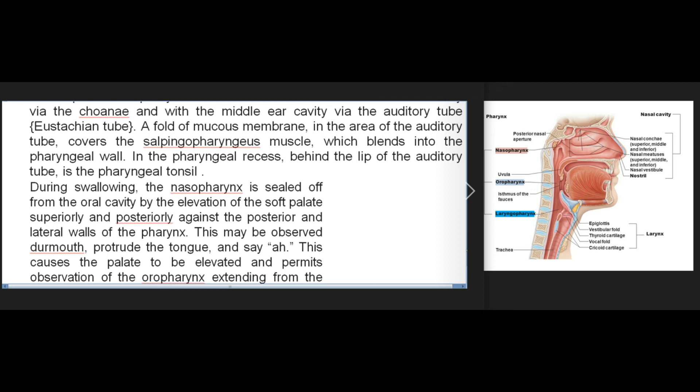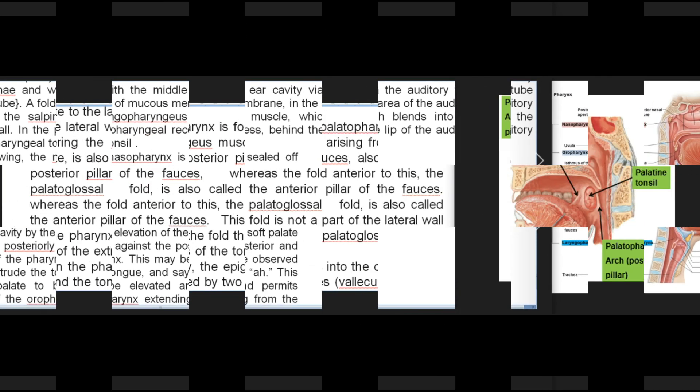During swallowing, the nasopharynx is sealed off from the oral cavity by the elevation of the soft palate superiorly and posteriorly against the posterior and lateral walls of the pharynx. This may be observed by having a patient protrude the tongue and say 'ah,' causing the palate to be elevated and permitting observation of the oropharynx extending from the palate to the larynx.